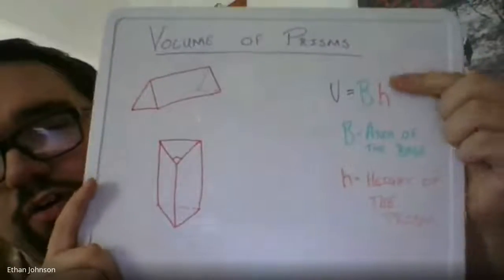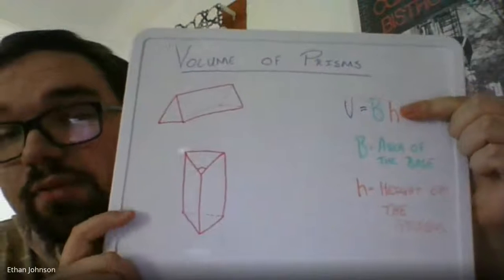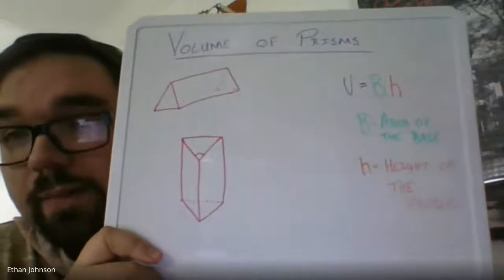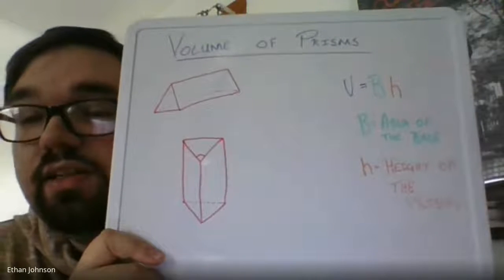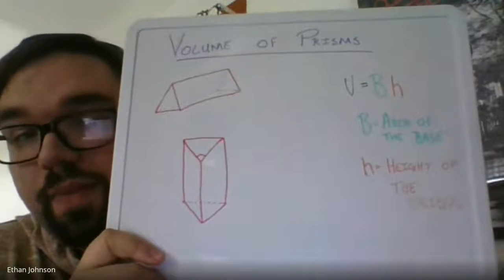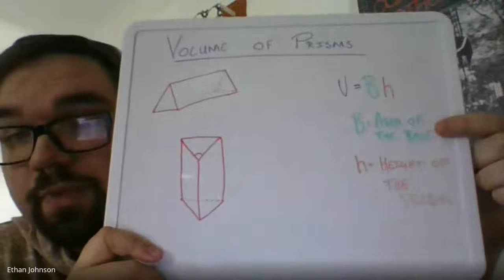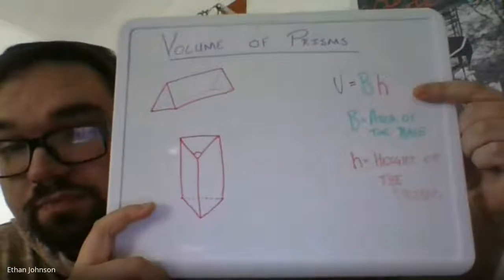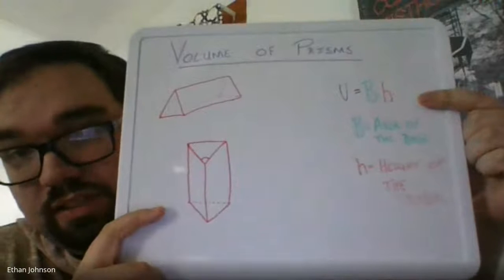Here it is. If you notice, the formula is the same. Capital V equals capital BH. Now remember, capital letters in this case is dealing with area of the base. That's why it's capital B. And then this H is the height of the prism, just like how it was the height of the cylinder.